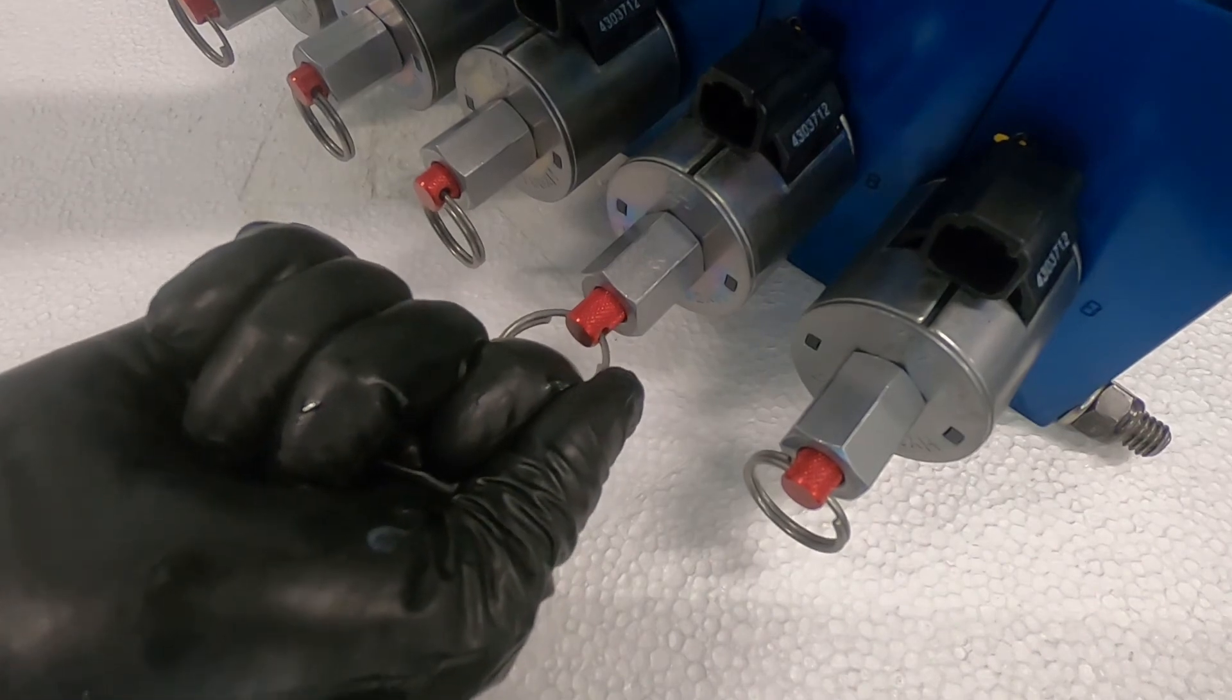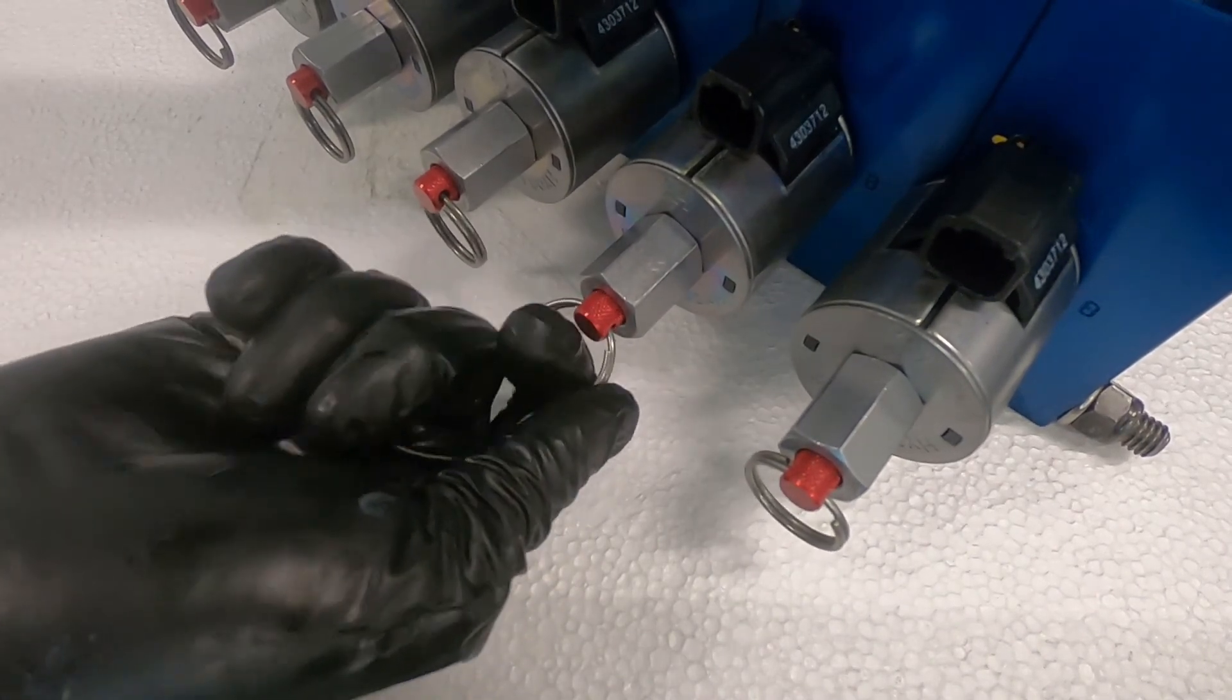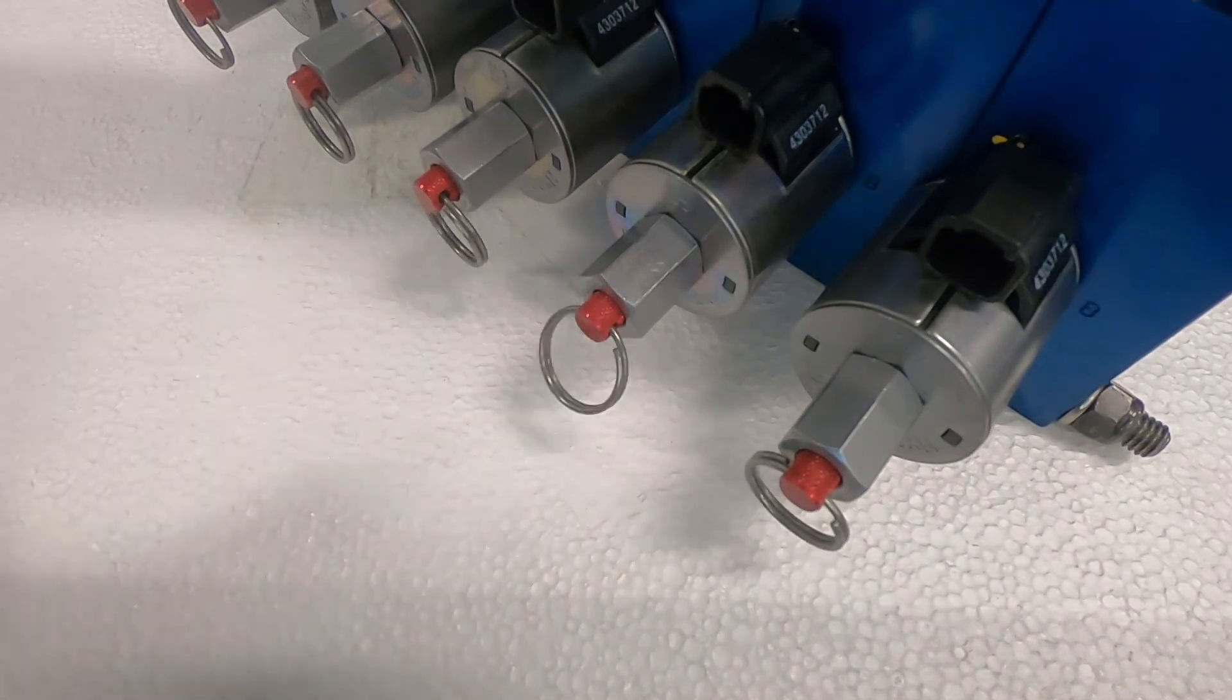Hold to activate a momentary actuation of the plow function. Release the keyring to return to normal operation.